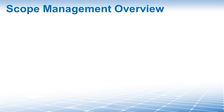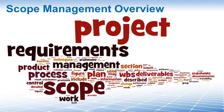The PMBOK Guide says that project scope management includes the processes required to ensure that the project includes all the work required, and only the work required, to complete the project successfully. This means that project scope management is concerned with defining and controlling exactly what service, product, or result the project will and won't deliver. And that begins with planning, as you will see in the first section 5.1, plan scope management. Stick to the plan — it's always good advice, and it's especially important for a project manager.